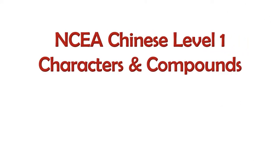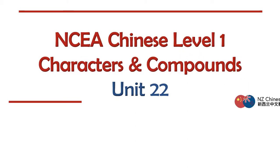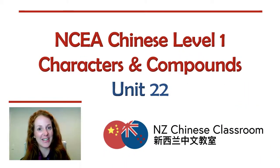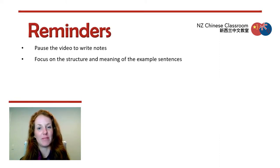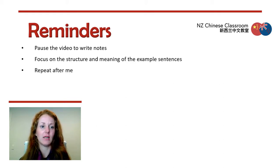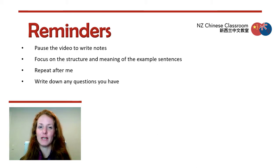NCEA Chinese Level 1 characters and compounds, Unit 22, brought to you by NCEA Chinese classroom. 大家好我是安利老师. A few reminders before we start: make sure you pause the video to write notes. Focus on the structure and meaning of the example sentences. Repeat after me to practice your tones and pronunciation, and write down any questions to discuss with your teacher in class.